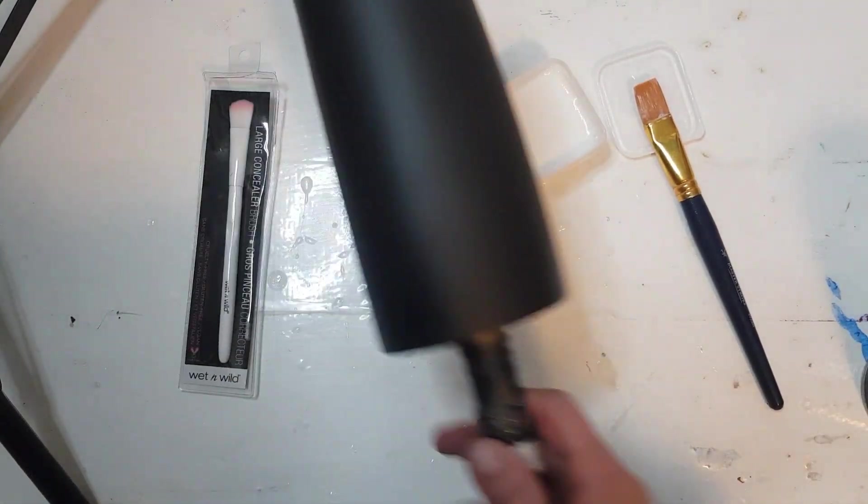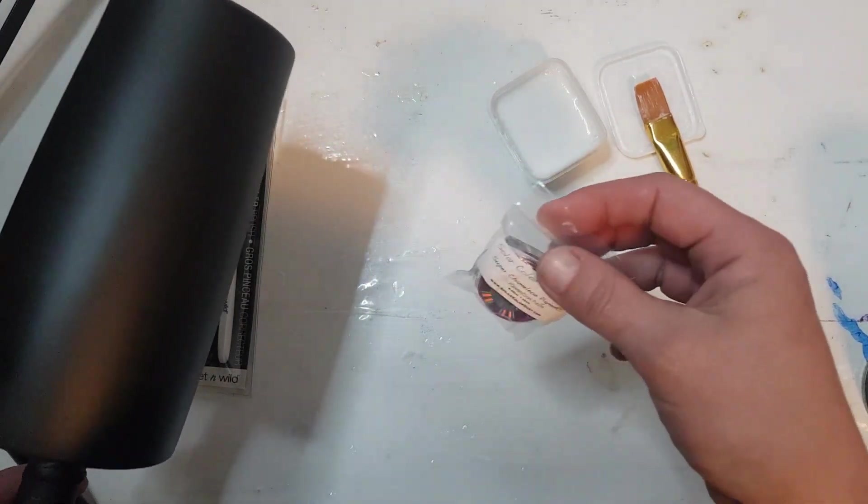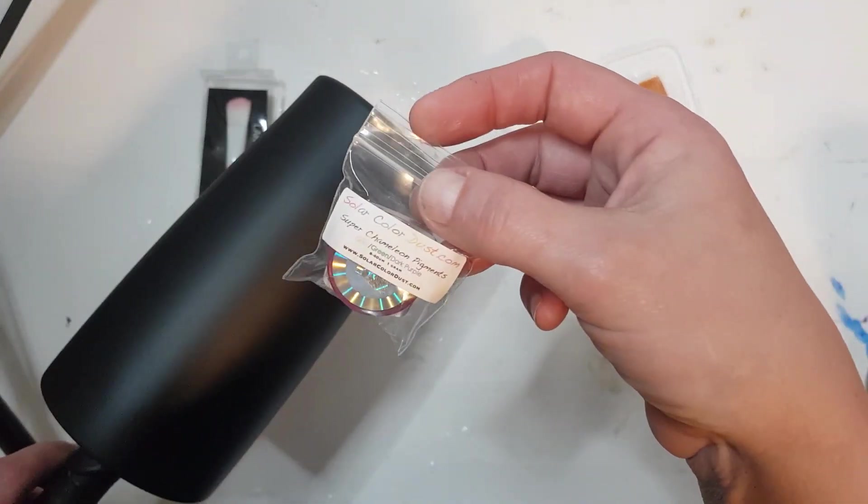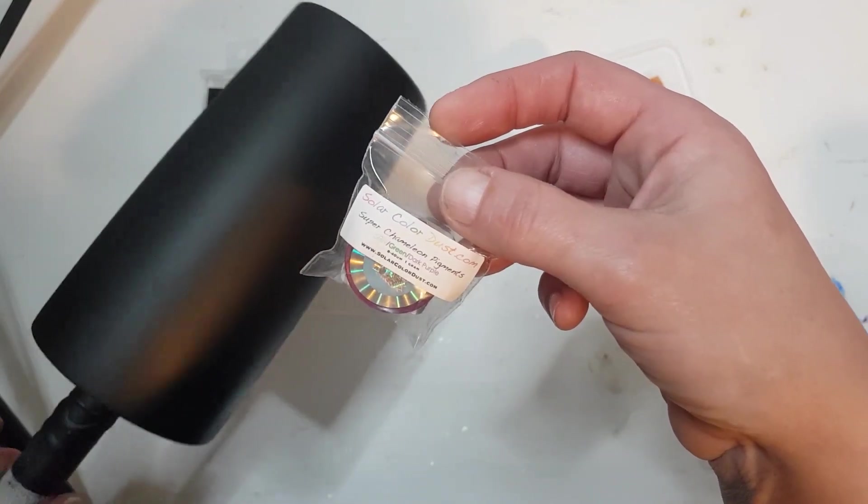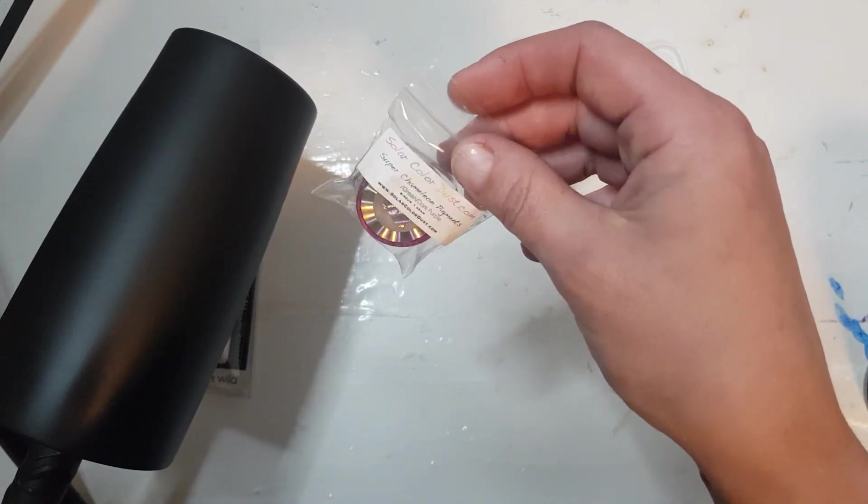Hi guys, it's Ray. I am going to do a Tack It Method cup with Super Chameleon Pigments from Solar Color Dust. This one has a shift with a green and a purple and I believe a gray.